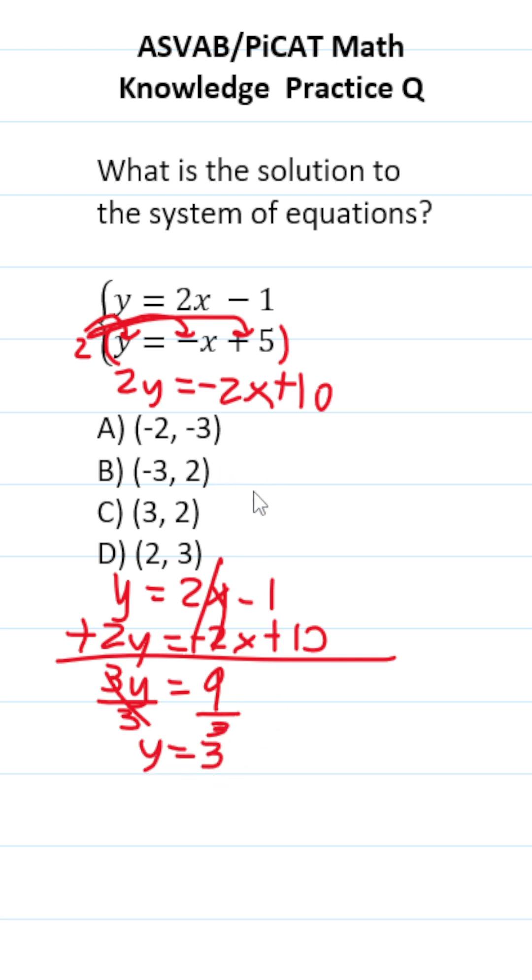Our solution is written as an ordered pair and we know that y is going to be 3. Let's solve for x now. To solve for x, just take this y value of 3 and plug it into either of the two original equations and you'll be able to get your x value. I'm going to plug it in right here. This becomes 3 = 2x - 1.